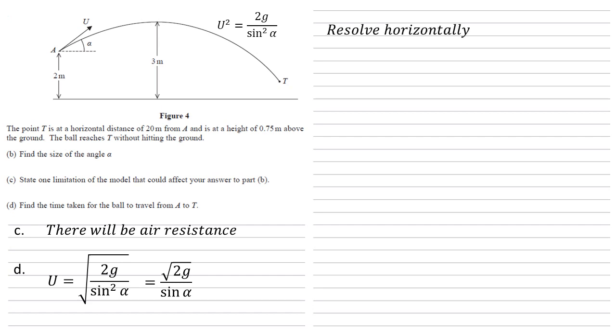If we now use this resolving horizontally, we're going to use the formula s equals ut. We know that our initial velocity horizontally is u cos alpha. Now we can replace the u with root 2g over sine alpha. Putting this in, we get s of 20 equals the u of root 2g over sine alpha all times by cos alpha times by T. Now cos over sine is 1 over tan. So 20 equals root 2g over tan alpha times by T. Rearranging to give T, we get T equals 20 tan alpha over root 2g.